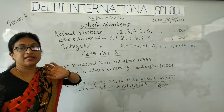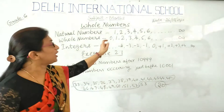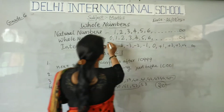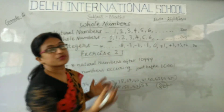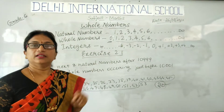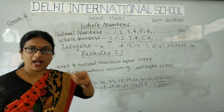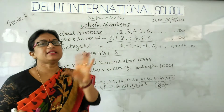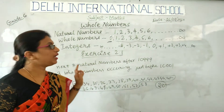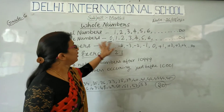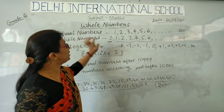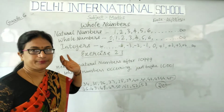Whole numbers means whatever natural numbers are there, including 0, becomes the whole number. Whole number is the natural number including 0 — so including 0, this becomes the whole number.